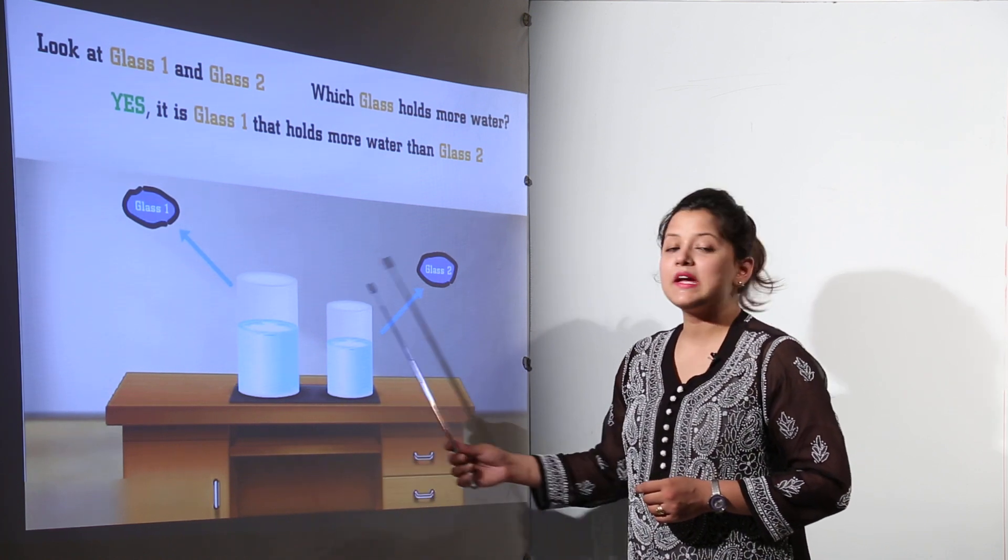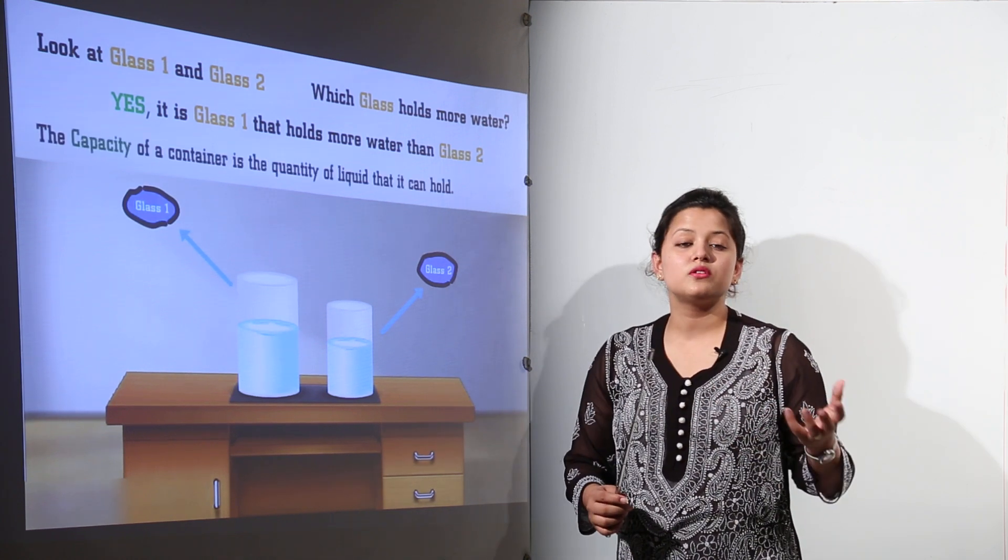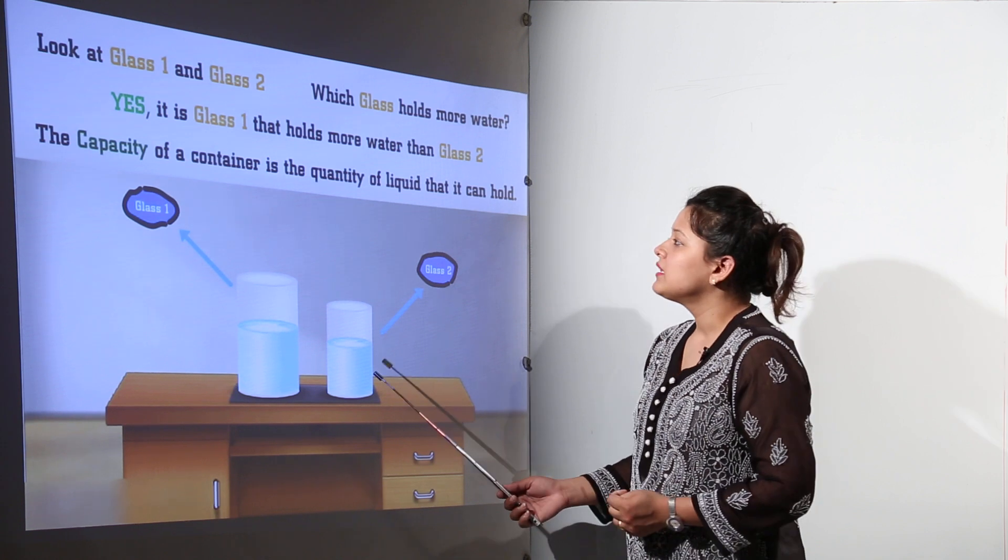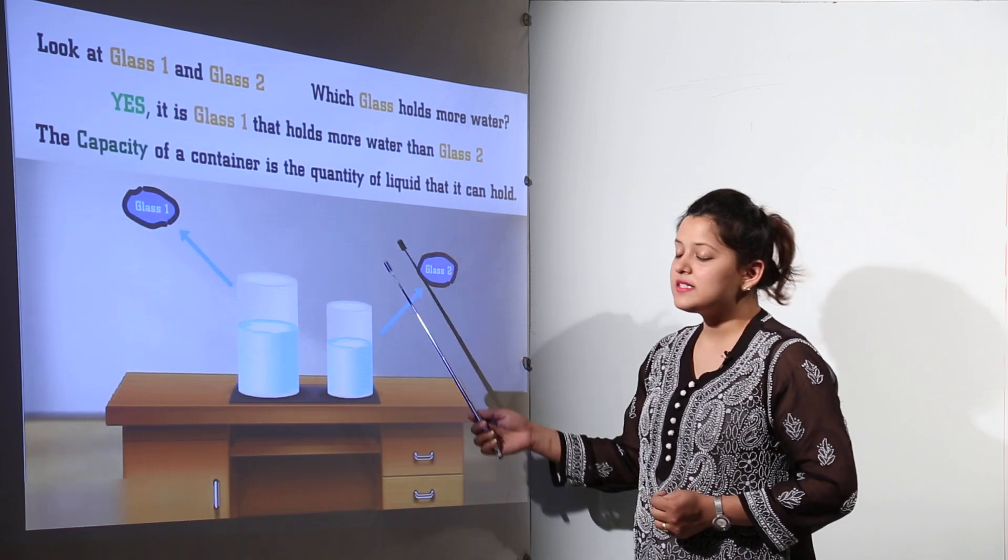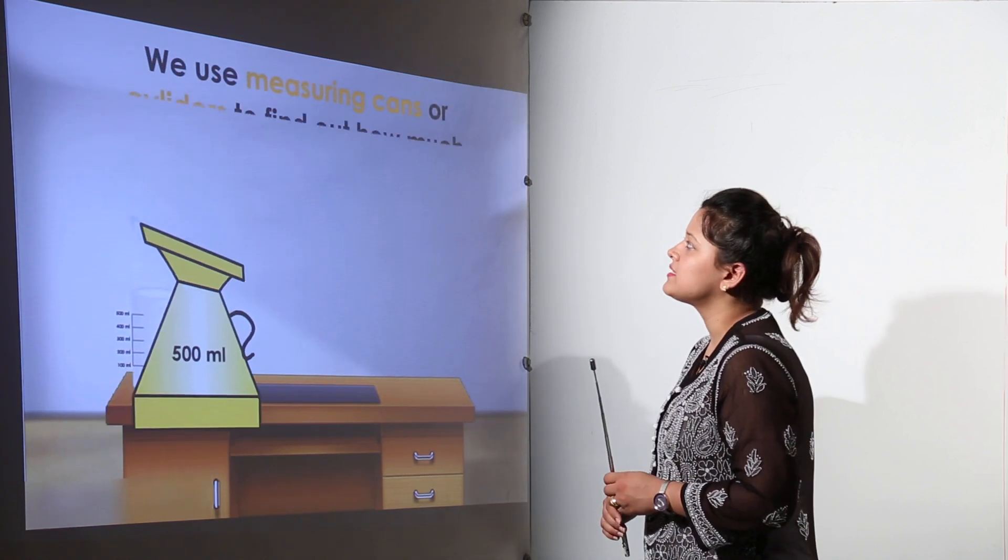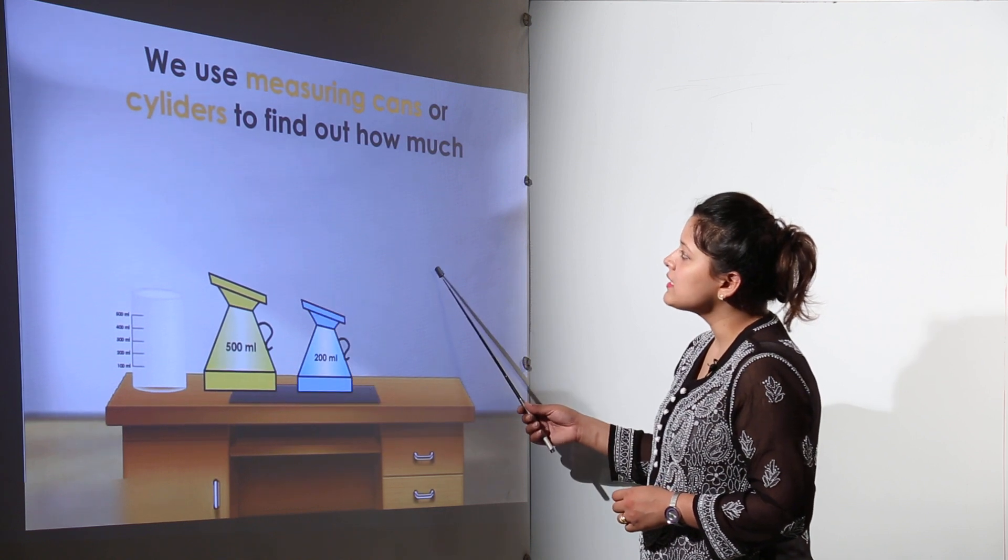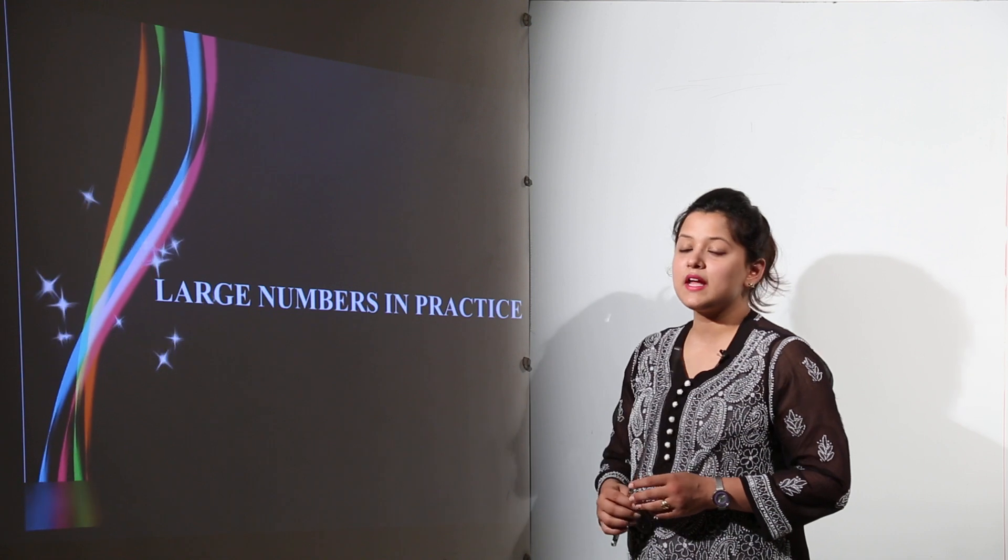So how did you identified it? That identification is done by the water holding capacity. The capacity of the container is the quantity of liquid that it can hold. The container that can hold more liquid will have the more capacity. We use meter cans or cylinders to find how much liquid a vessel can hold.